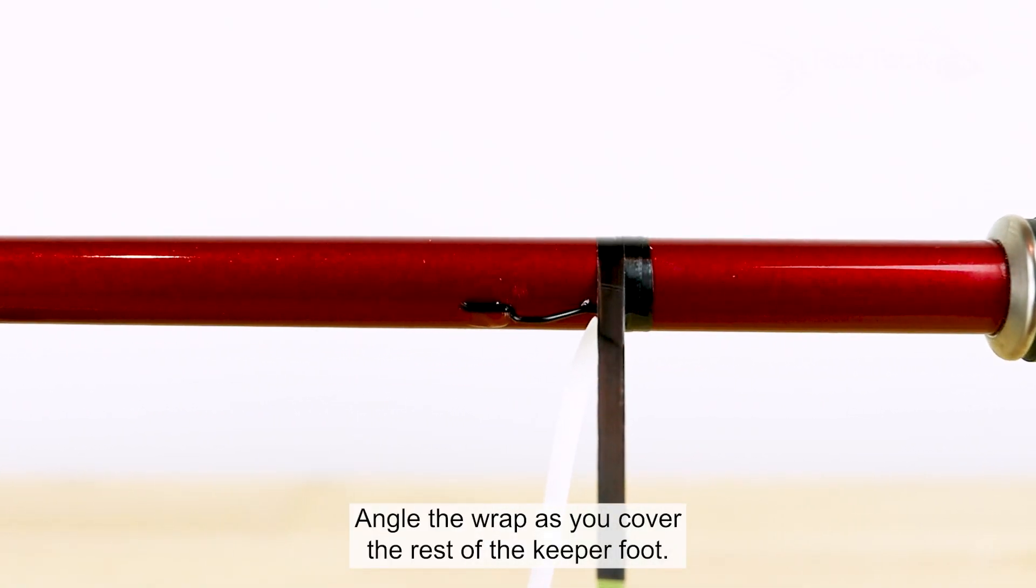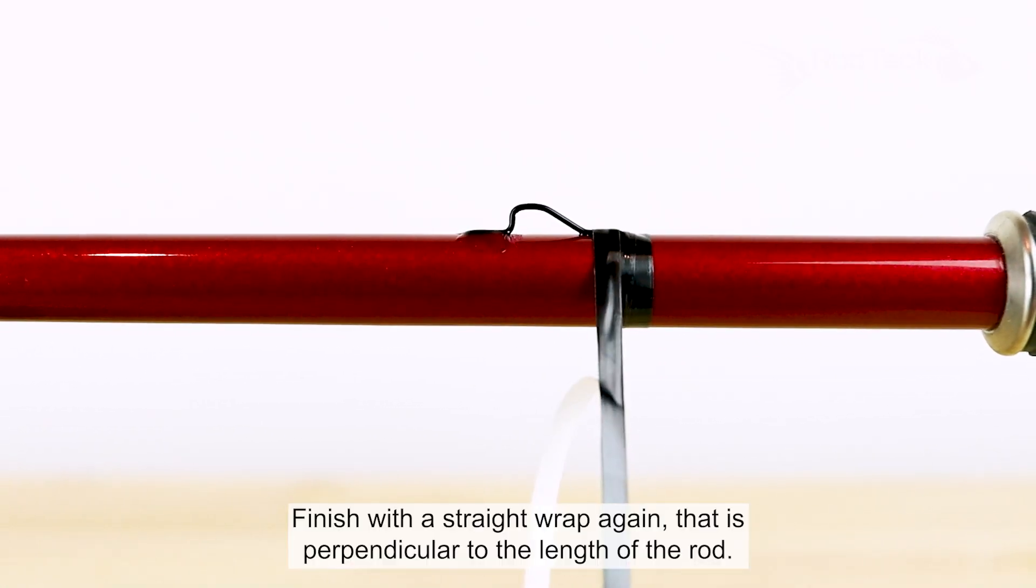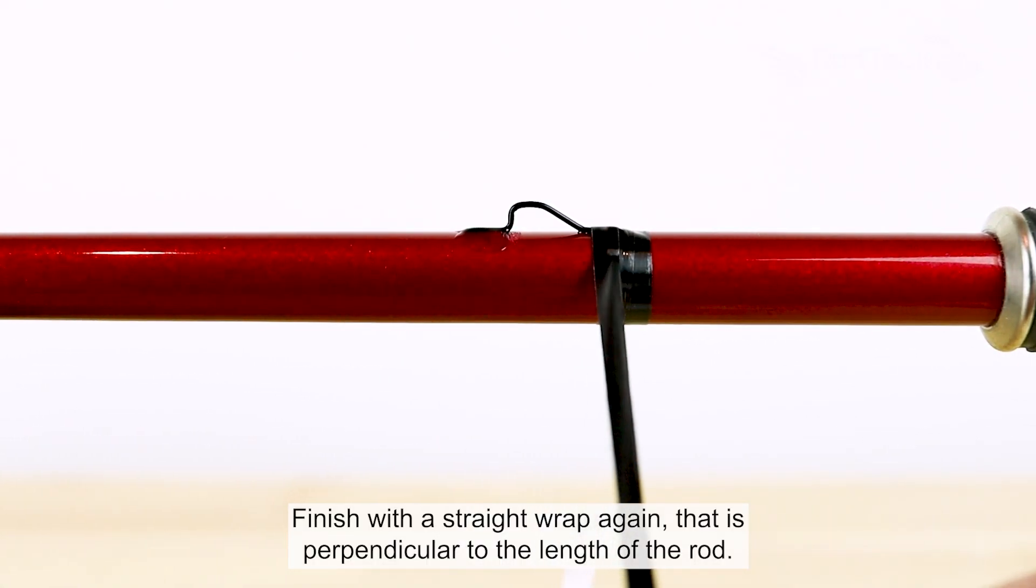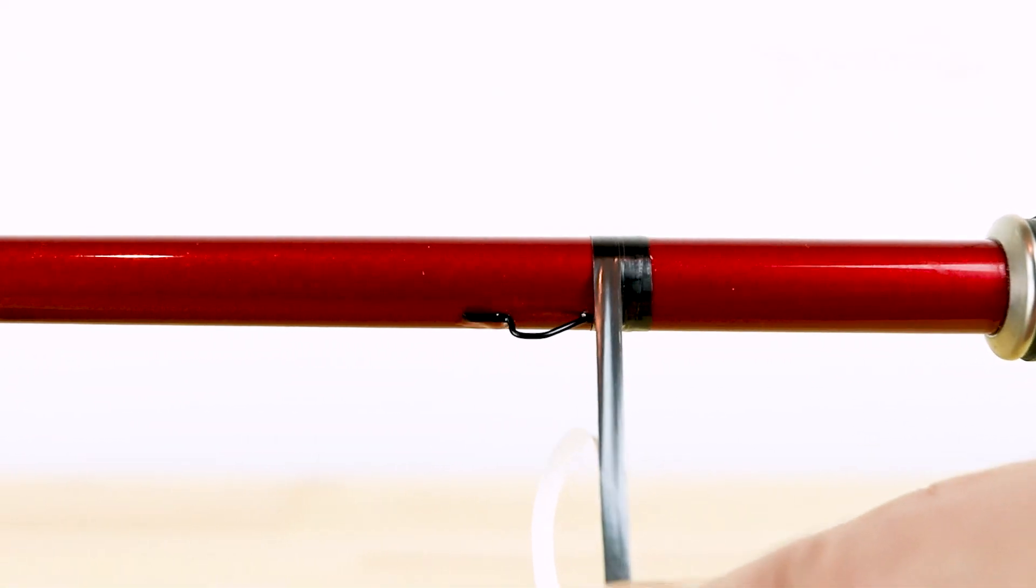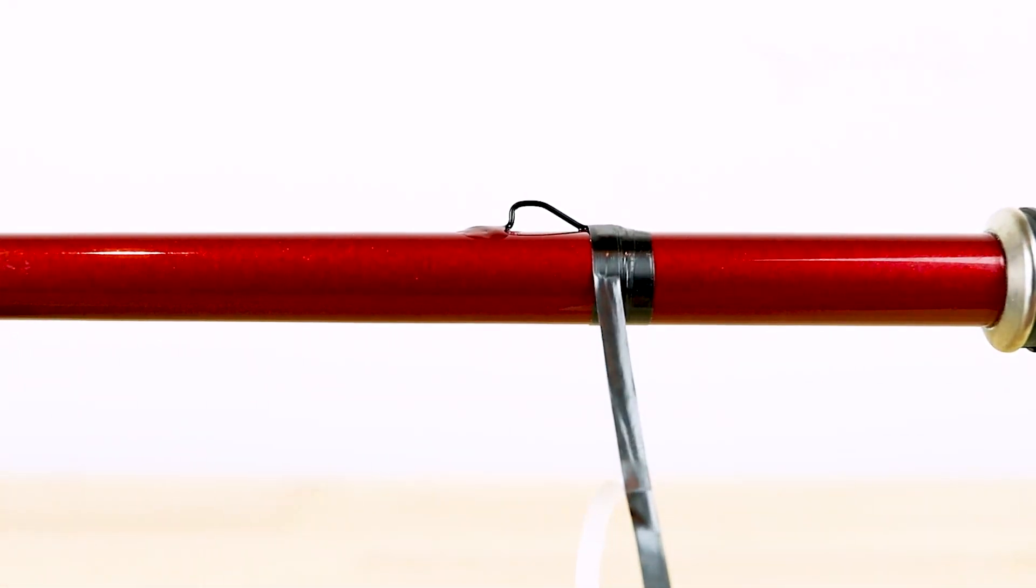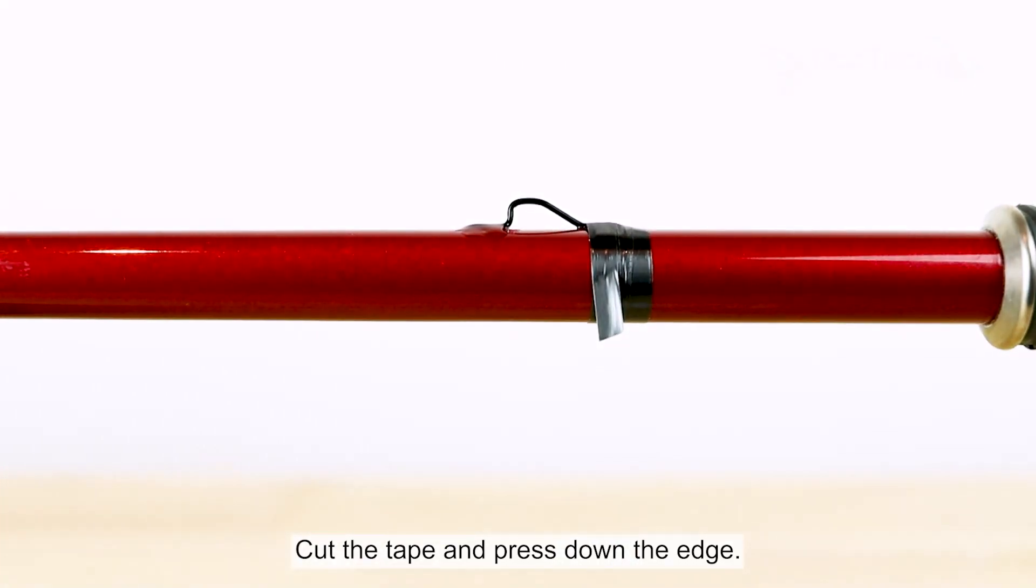Angle the wrap as you cover the rest of the keeper foot. Finish with a straight wrap again that is perpendicular to the length of the rod. Cut the sea tape and press down the edge.